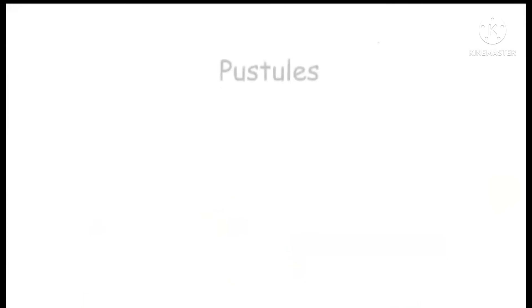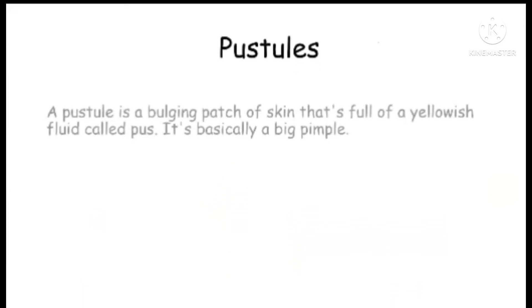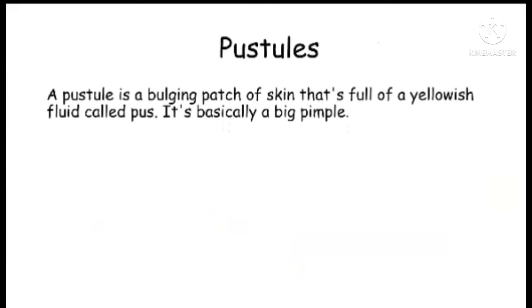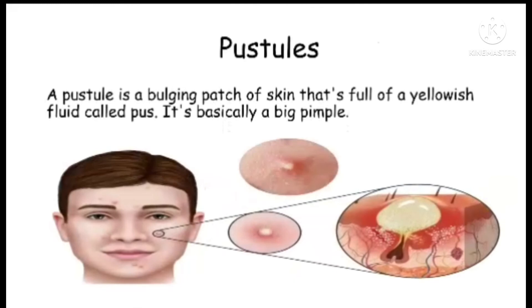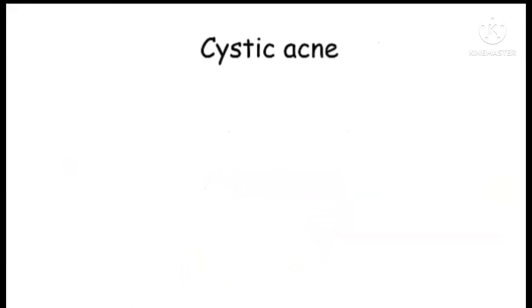A pustule is a raised patch of skin that's full of yellowish fluid called pus. It's basically a large pimple — you can see the white pus inside the pimple.